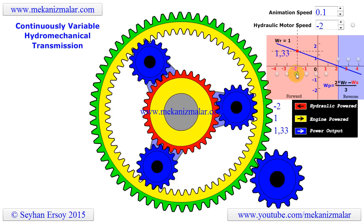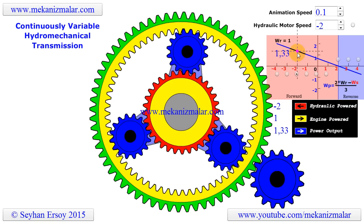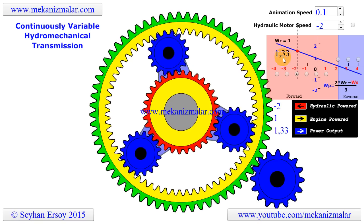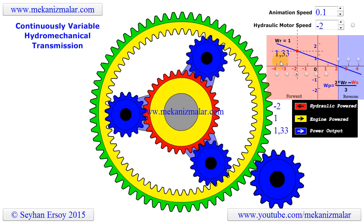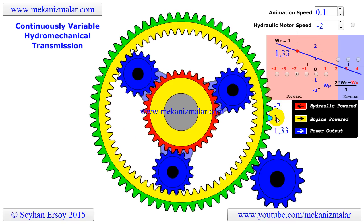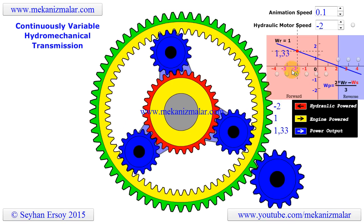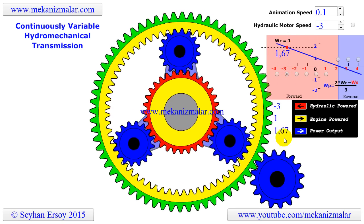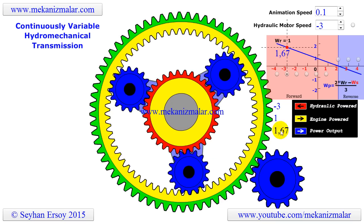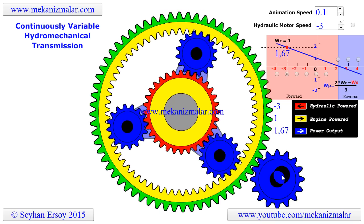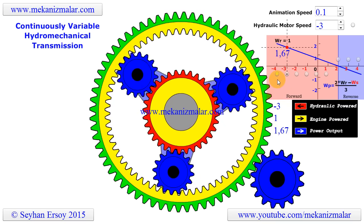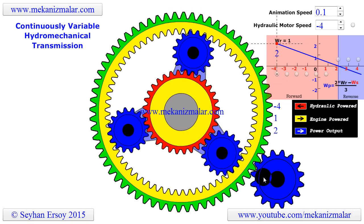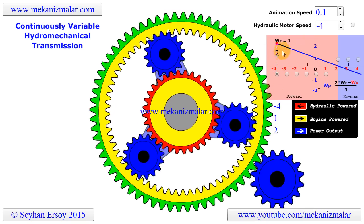When the sun gear rotates twice as fast as the ring gear, the cage rotates 1.33 times faster than the ring gear. When the sun gear rotates 3 times as fast as the ring gear, the cage rotates 1.67 times faster than the ring gear. When the sun gear rotates 4 times as fast as the ring gear, the cage rotates 2 times faster than the ring gear.